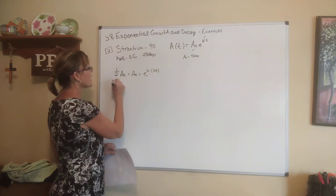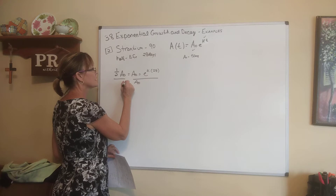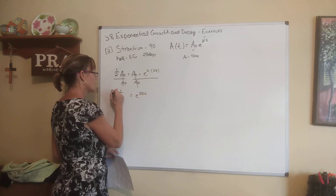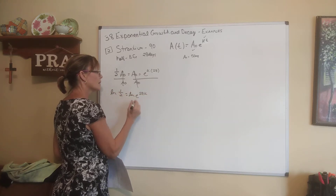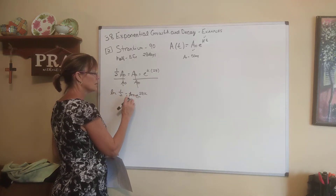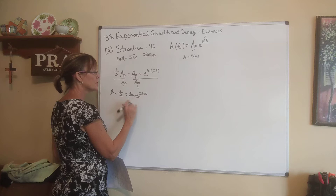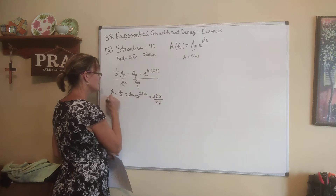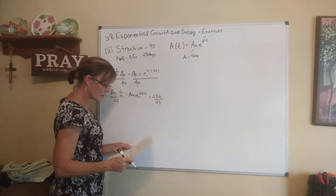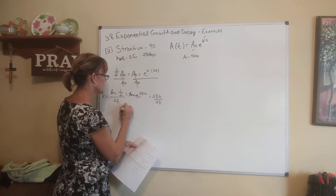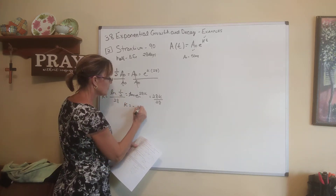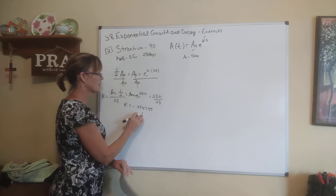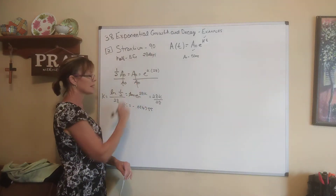Let's solve for k. Divide both sides by A-sub-zero to isolate the exponential expression. We get one-half equals e to the 28k. Apply a natural log — log base e of e to the something — these are inverses undoing each other, so we just have this equal to 28k. Divide both sides by 28. So k equals the natural log of one-half divided by 28, which in decimal is negative 0.024755. k ended up being negative, and that should agree because this is decaying.